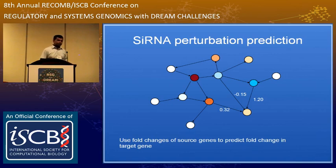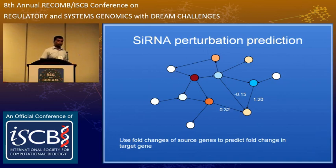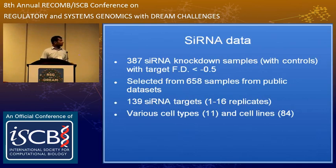I tested this network on siRNA perturbation data. siRNA perturbation is the easiest to test because I know exactly where the external factor is and what gene it is affecting. The same idea: I have fold changes for neighboring genes, use them to predict the fold change of a given gene, and compare to the actual fold change from the siRNA data. I had 387 siRNA knockdown samples with associated controls where the siRNA target fold difference is less than minus 0.5, confirming actual knockdown of the target — mostly cancer-related genes in various cell lines.